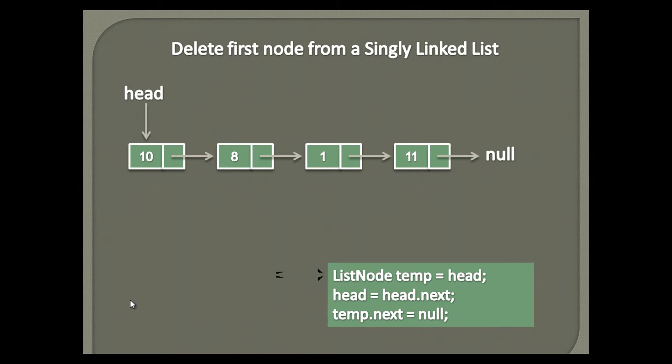In step 1, we create a temporary list node variable by the name 'temp' and point it to the head node, which is the first node of the linked list.